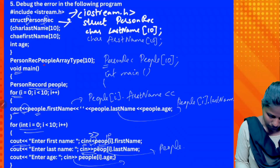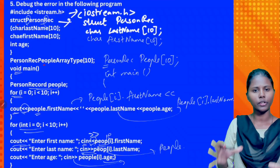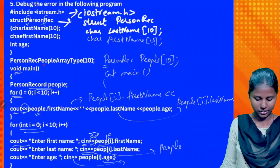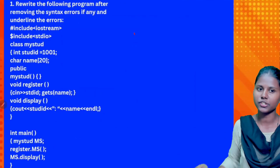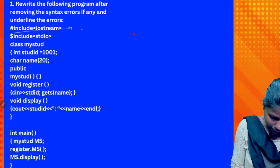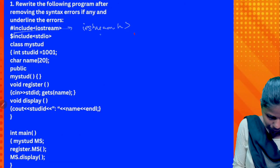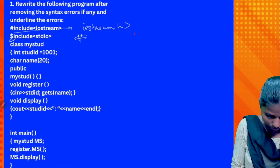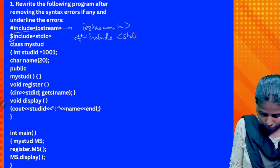This is correct, so there is no problem. That means we will list all these. Next problem — this is easy to check. Hash include iostream.h, iostream.h — here is hash. So hash include stdio.h.